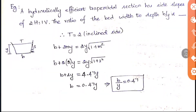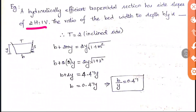The top width equals b plus 2my, which equals 2y times root of 1 plus m². Using Pythagoras to find the inclined side and substituting m equals 2, we get b plus 4y equals 4.47y. Therefore b equals 0.47y, giving a b/y ratio of 0.47.